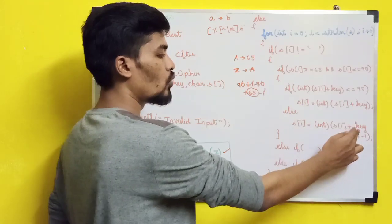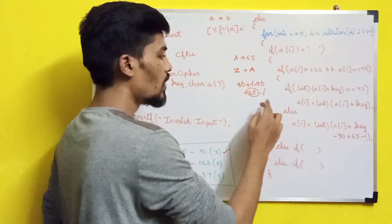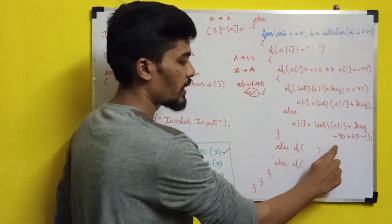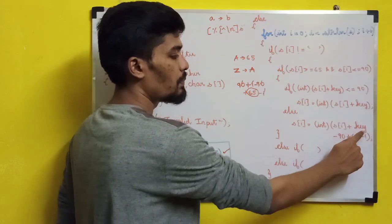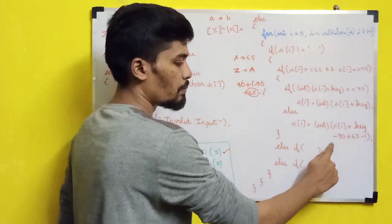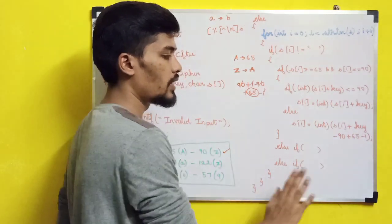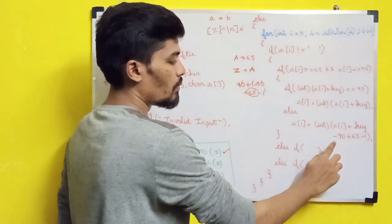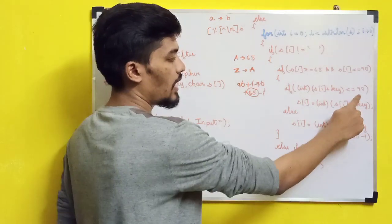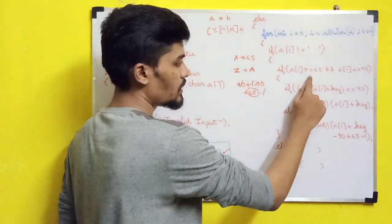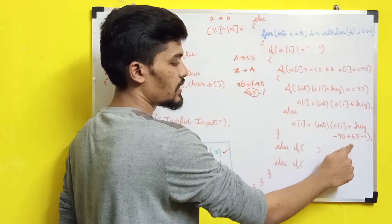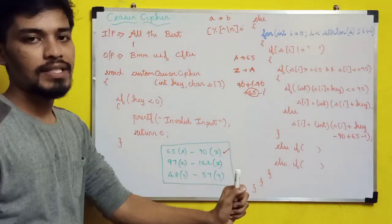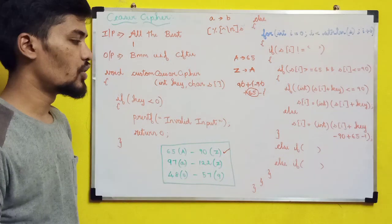Suppose you have key value 2, then we use the wrap-around: s[i] plus key minus 90 plus 65 minus 1. So the formula is: the string value plus key, minus the upper limit 90, plus the lower limit 65, minus 1. This completes the uppercase case.